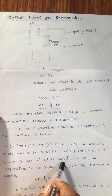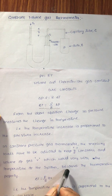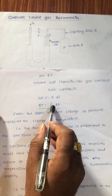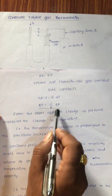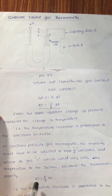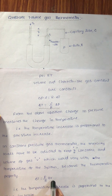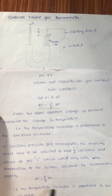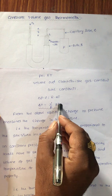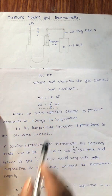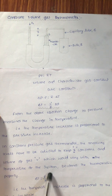The volume of gas, which would vary with the temperature of the system, becomes the thermometric property. If pressure is constant, from the ideal gas equation we can write δT = (P/R)·δV. The temperature increase is proportional to the volume increase, so the rate of change in volume measures the change in temperature. In constant volume gas thermometer, the thermometric property is pressure; in constant pressure gas thermometer, the thermometric property is volume.